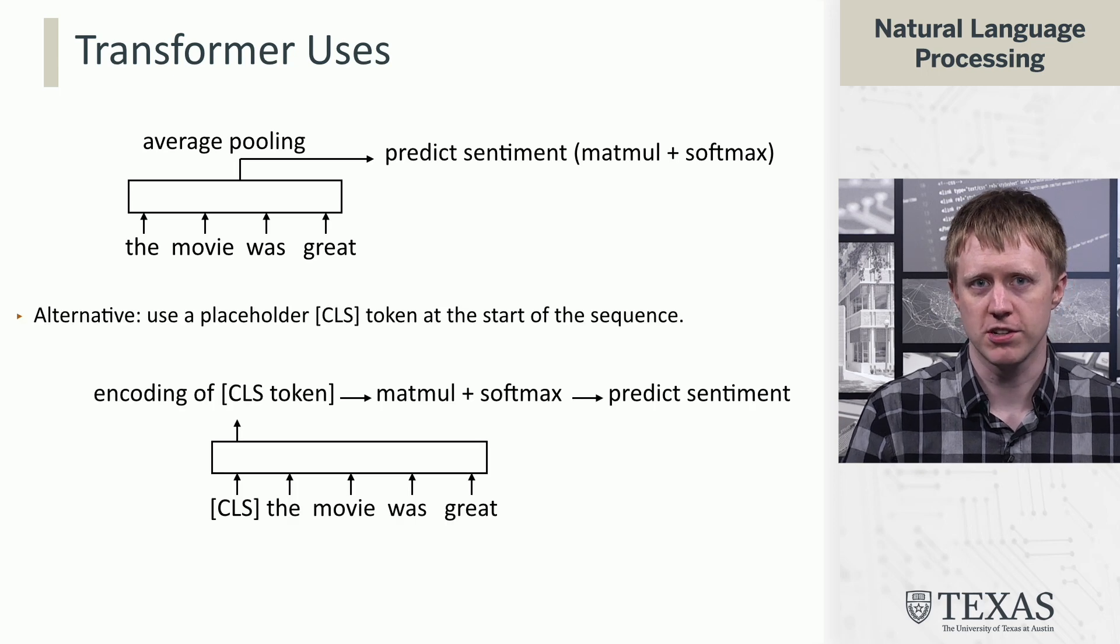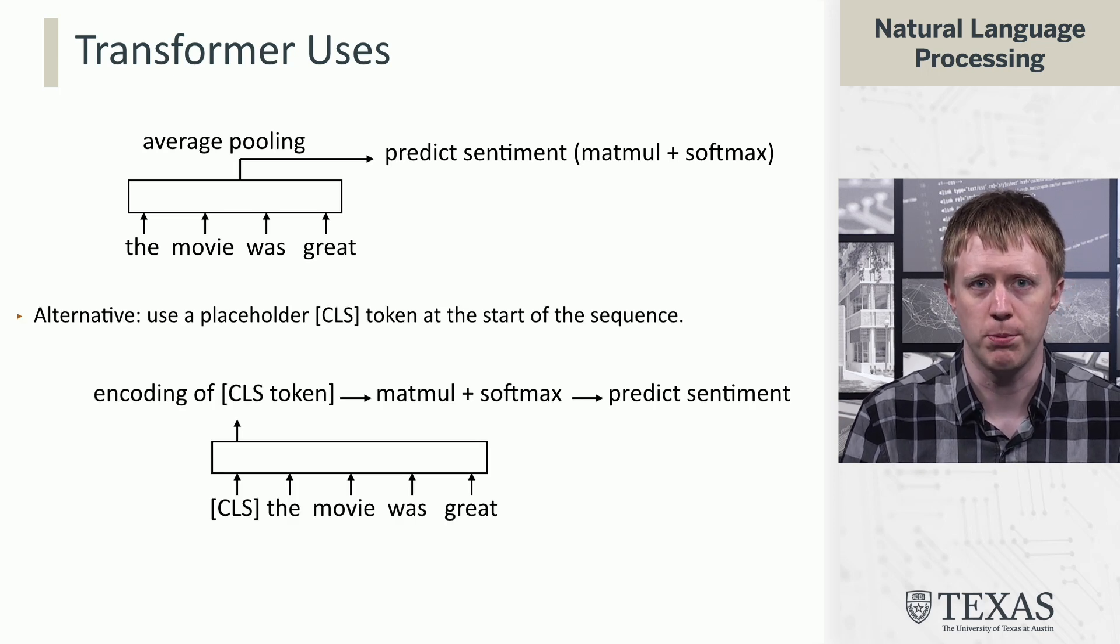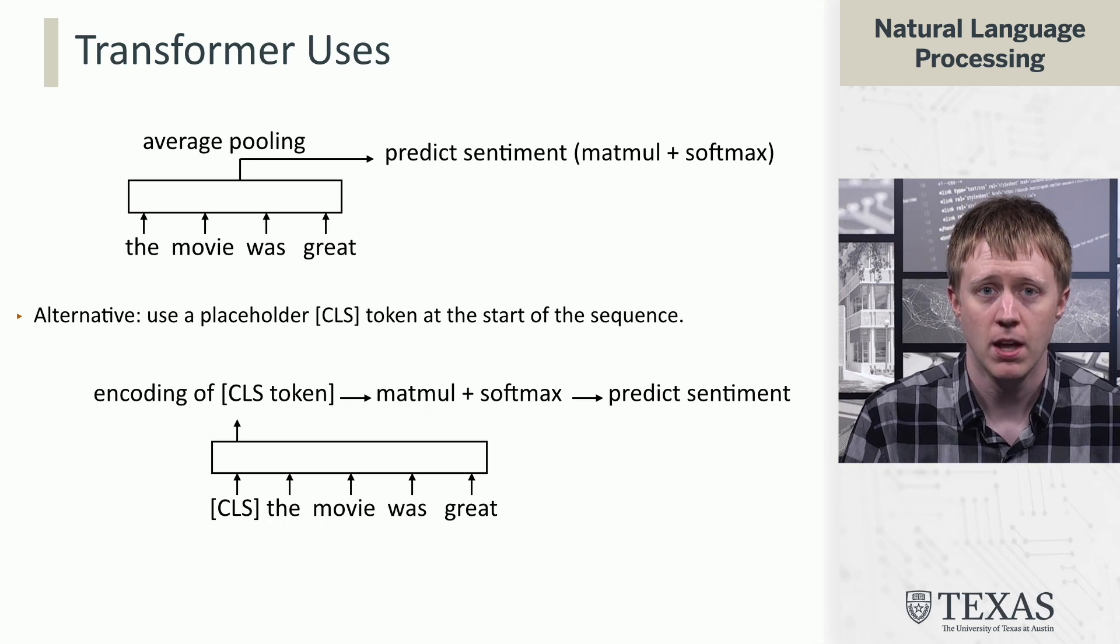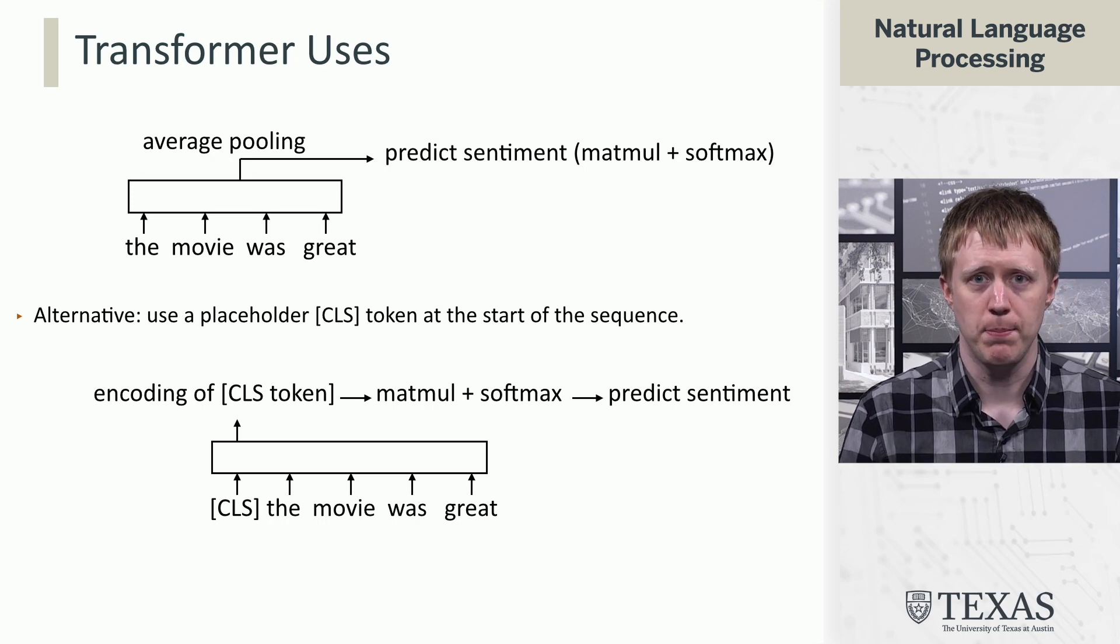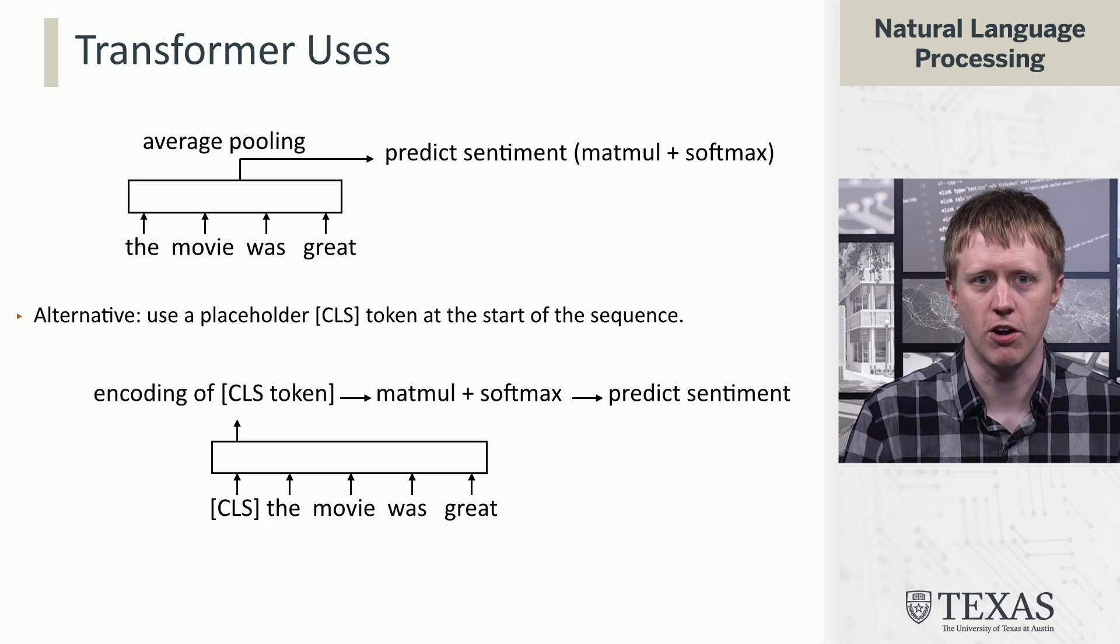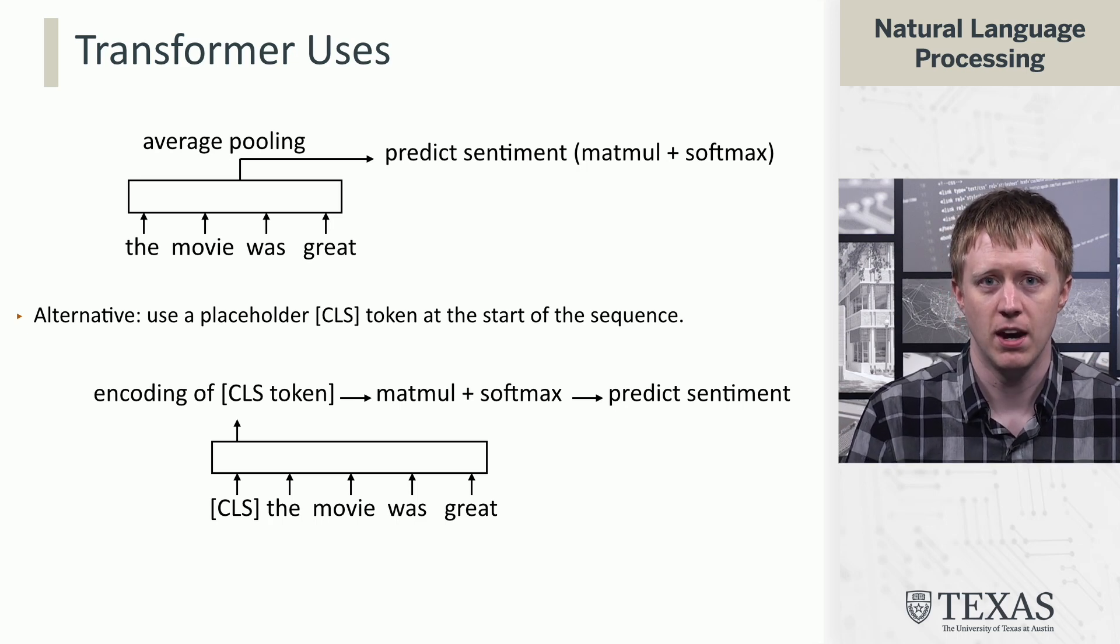But there's actually another way which is a little bit more standard when we look at how people use transformers in practice and how the pre-trained models are set up. What we typically do is we append a placeholder token, which is typically denoted by bracket CLS for classification at the start of the sequence.